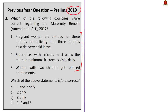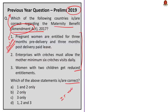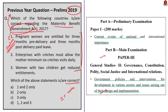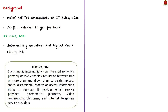Remember this question from UPSC Prelims 2019? It asked about the Maternity Benefit Amendment Act 2017. If there is an important amendment, there is a possibility of questions regarding it appearing in the prelims. This is exactly why we are going to discuss this article today — we will see about the important amendments made to the IT Rules 2021. The Ministry of Electronics and Information Technology has notified the amendments to the IT Rules 2021 and put out a draft to get feedback from relevant stakeholders.